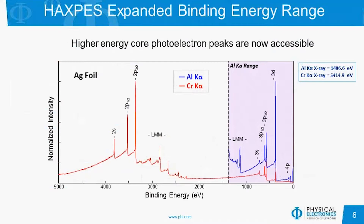With HAXPES, you have access to additional core photoelectron transitions. I have shown both the HAXPES and XPS surveys of a silver foil sample — XPS in blue and HAXPES in red. The purple region shows the energy range accessible with traditional XPS. With the HAXPES source, there is a significantly larger binding energy window. In addition to what we can see with the aluminum X-ray source, we can also see the 2S and 2P transitions. Also, if you have an Auger peak or Auger manifold overlapping a transition of interest, you can switch to the chromium source and move those Auger lines to a different energy.